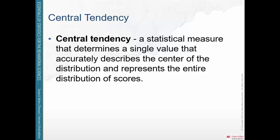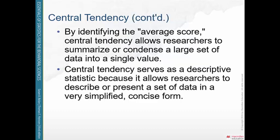Frequency distributions, which we talked about in Chapter 2, were our first descriptive statistic technique — we took our raw data and organized it into a table or graph. Central tendency is another descriptive statistic that summarizes your data, because you end up with one number that represents the average of your entire data set. So if I collected IQ scores on 1,000 children who have had a stroke, I end up with one measure of central tendency — a mean, a median, or a mode — one number that represents the average score.